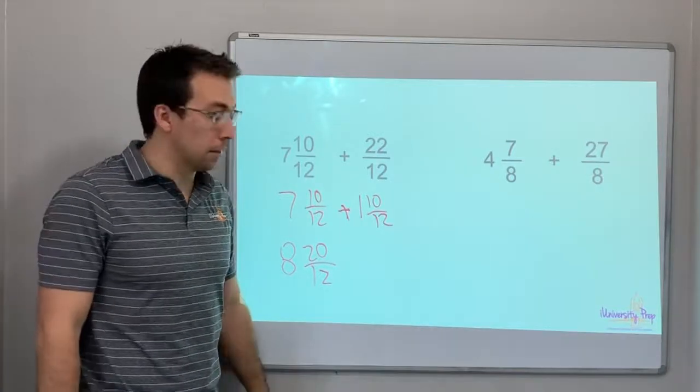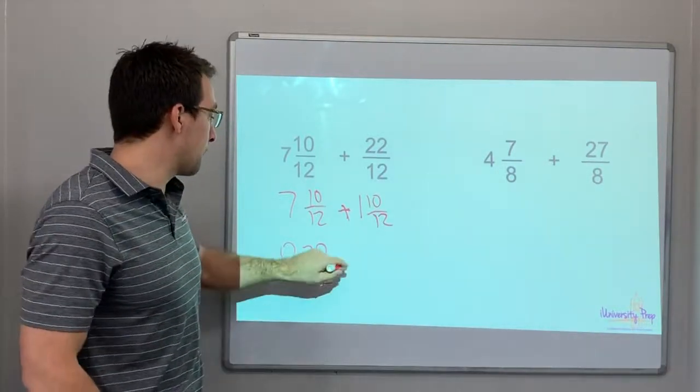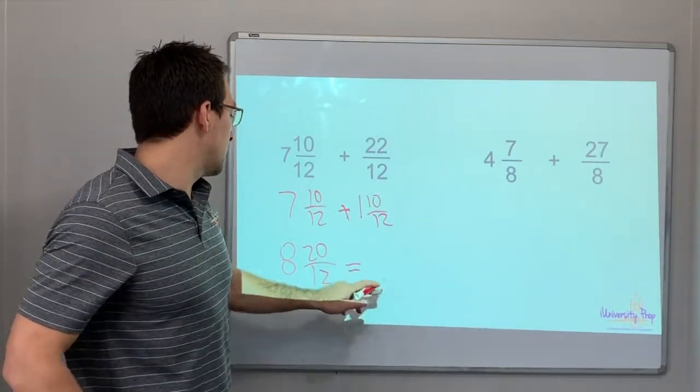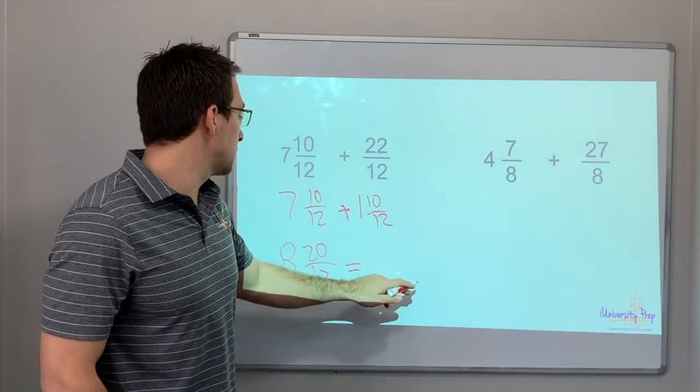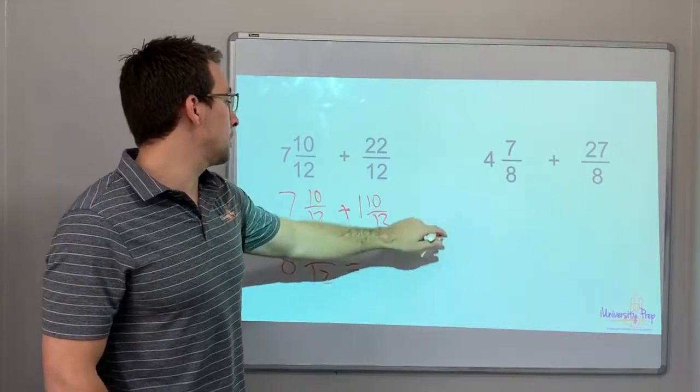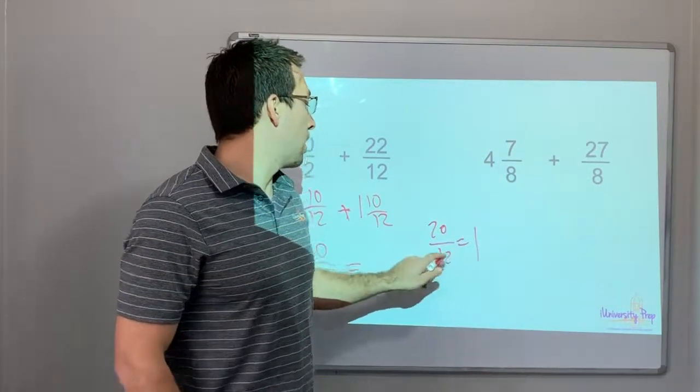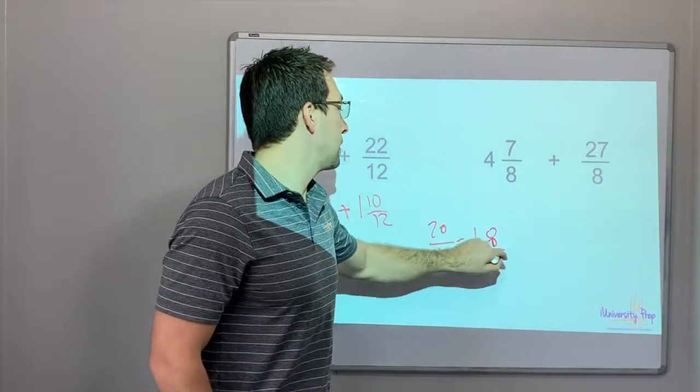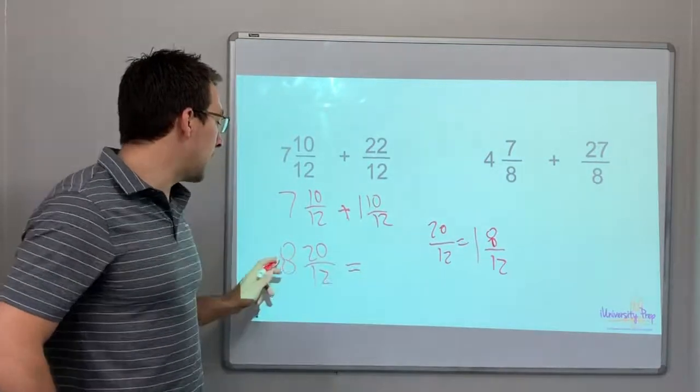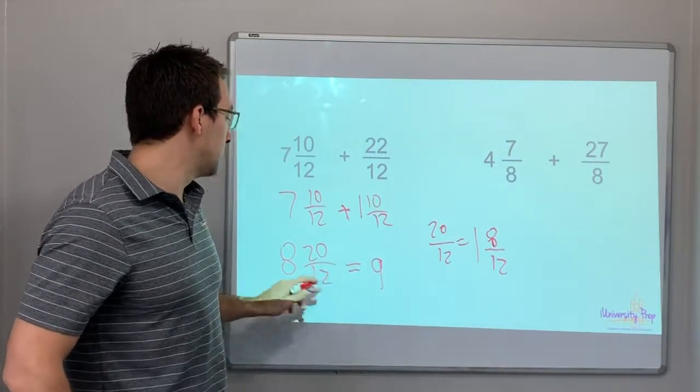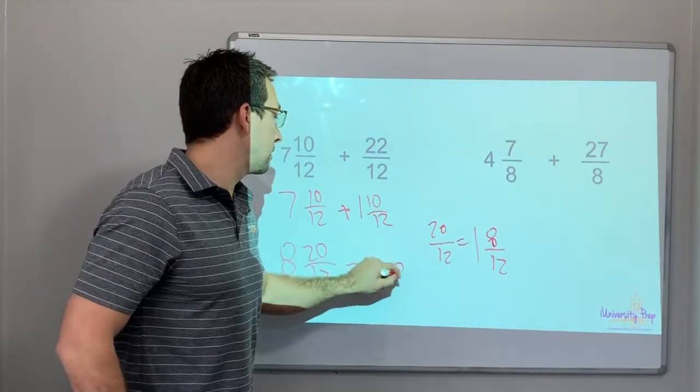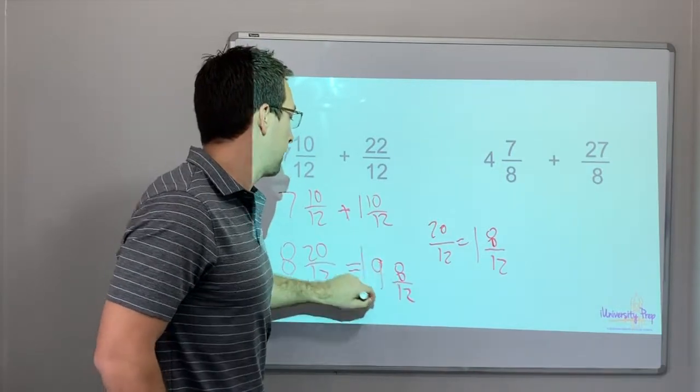Okay, that's pretty simple. So the improper fraction - 20/12 equals 1 and 8/12. So 1 plus 8 is 9 and 8/12. Final answer.